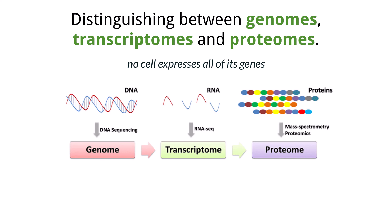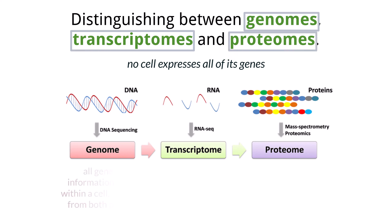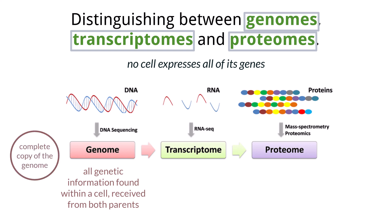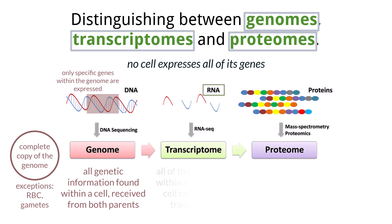To better understand this content, it is important that you know the difference between the terms genome, transcriptome, and proteome. The genome is defined as all of the genetic information received from both parents. All cells have a full copy of the genome, with some exceptions like red blood cells — as they do not have a nucleus — and gametes, as they only have half the genetic material. While cells typically have all the genetic material, they differentiate and express only those genes necessary for their specialized function. During transcription, the cell produces RNA, and all the RNA that a cell makes is called its transcriptome.